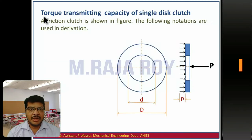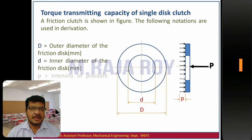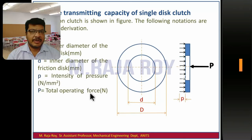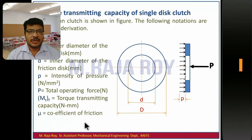Now I will derive the equation for torque transmitting capacity of the single disc clutch. The dimensions are: capital D representing the outer diameter in millimeters, small d representing the inner diameter in millimeters, p is the intensity of pressure in N/mm², capital P is the operating force, MT is the torque transmitting capacity in newton-millimeters — this we have to find — and mu is the coefficient of friction.